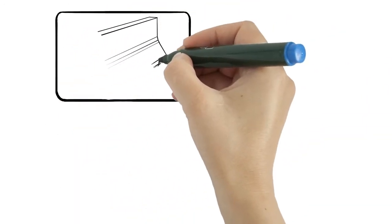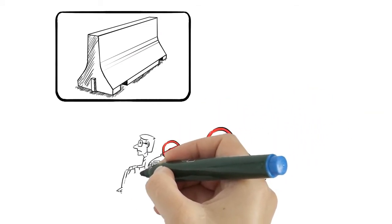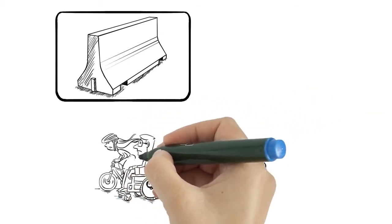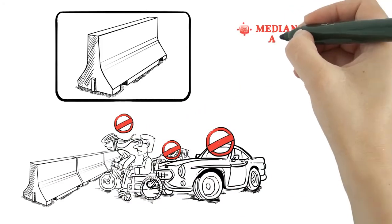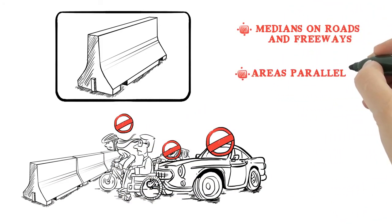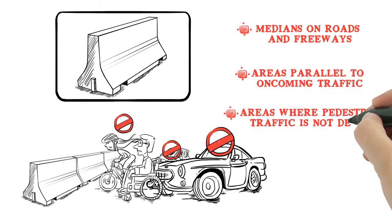Barriers are often installed in areas where safety concerns indicate that an intruding vehicle would be better redirected back onto the roadway rather than stopped in its place. Medians on roads and freeways. Areas parallel to oncoming traffic. Areas where pedestrian traffic is not desired.